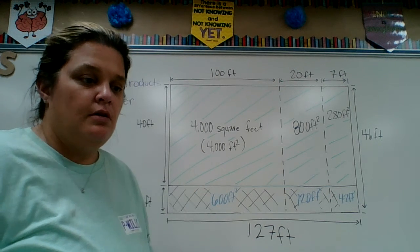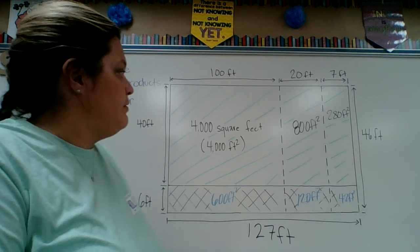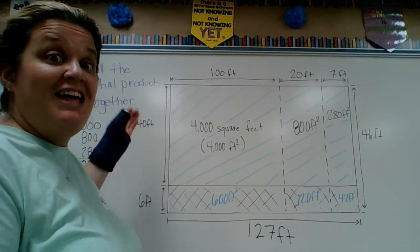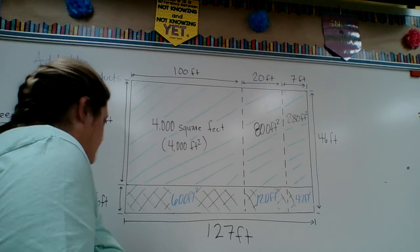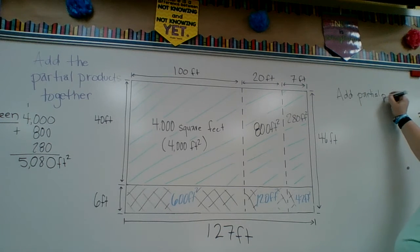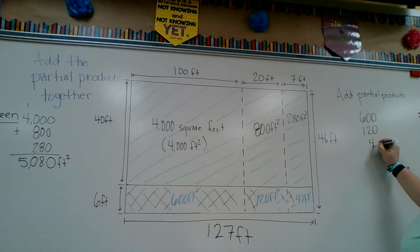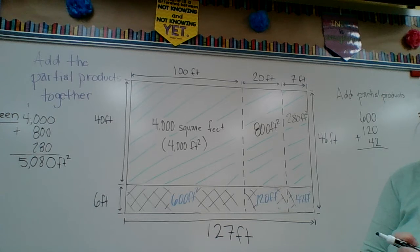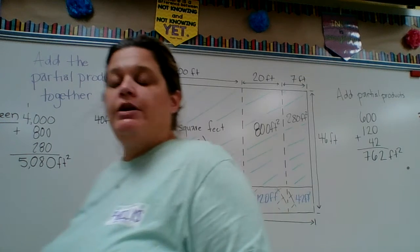Now what do we do? How do we find the area of the sidewalk? Same thing as we did for the grass — we add the partial products together. The partial products are 600 plus 120 plus 42. So: 0 plus 0 plus 2 is 2; 0 plus 2 plus 4 is 6; 6 plus 1 is 7. So 762 square feet for the sidewalk.